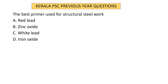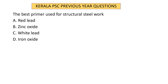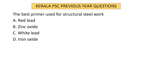Question 6: The best primer used for structural steel work is red lead. For wood work, white lead is most suitable. For structural steel work, the most suitable primer is red lead.